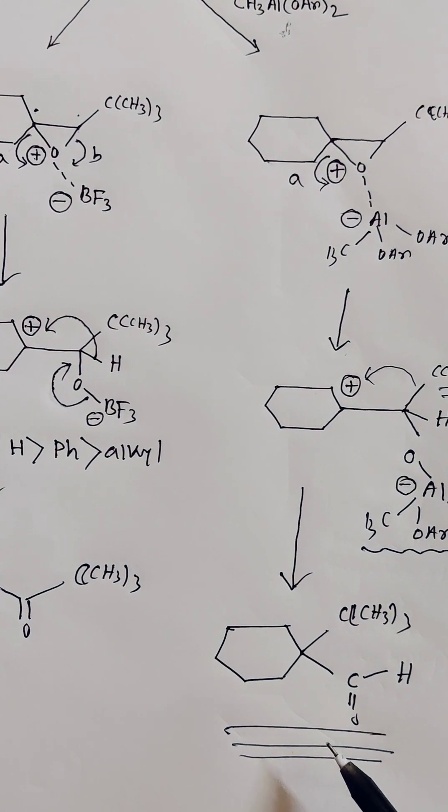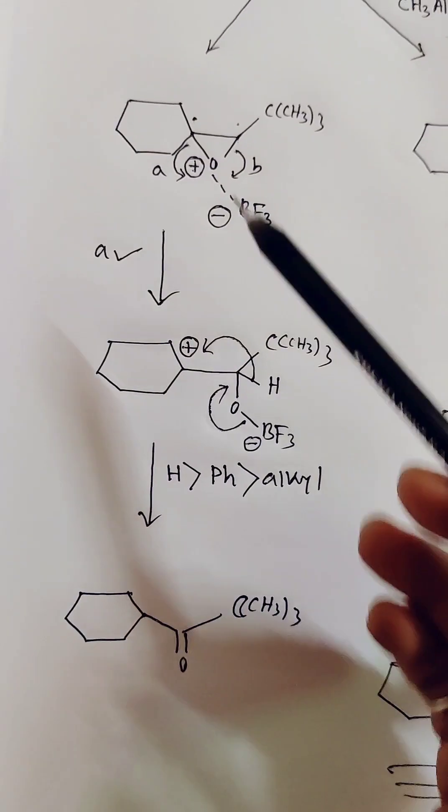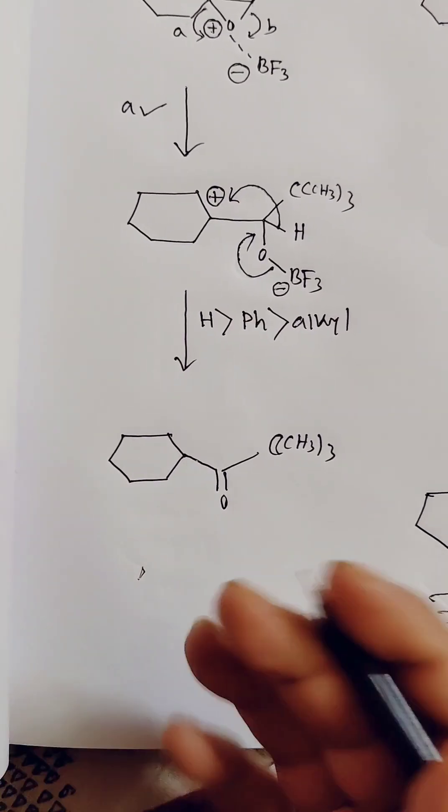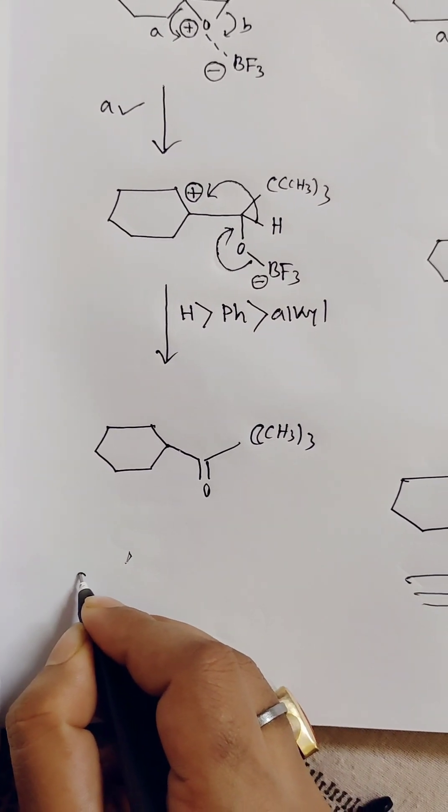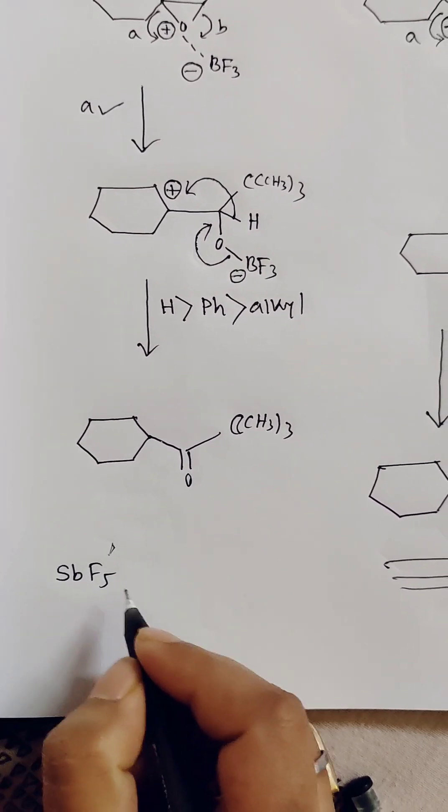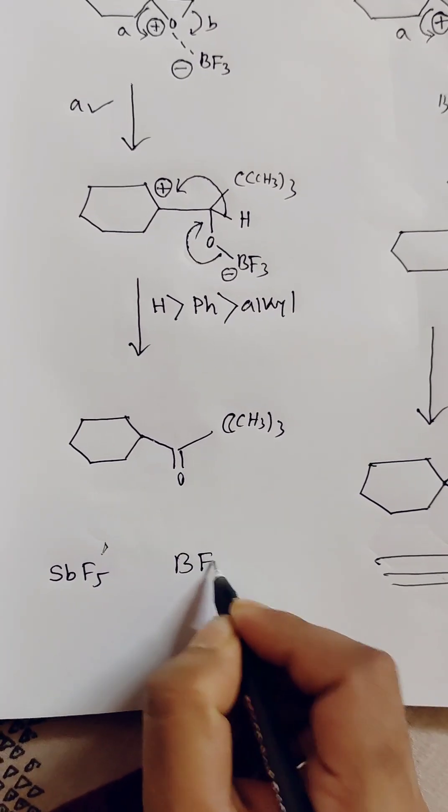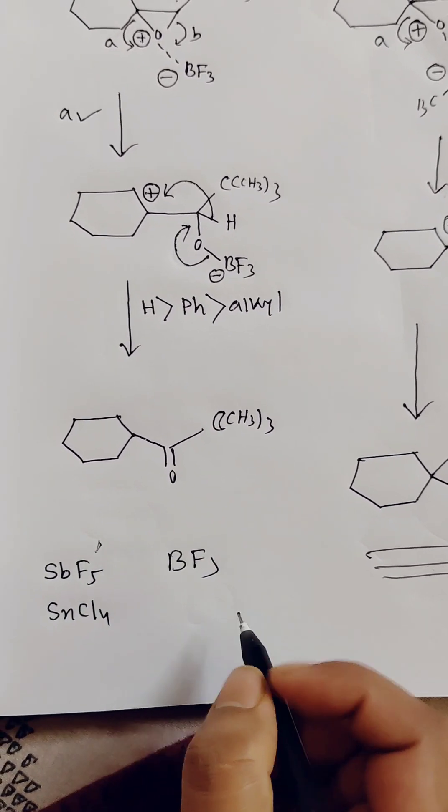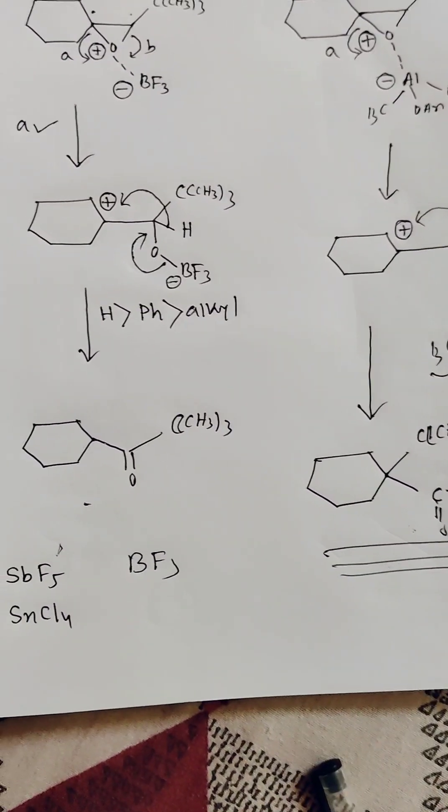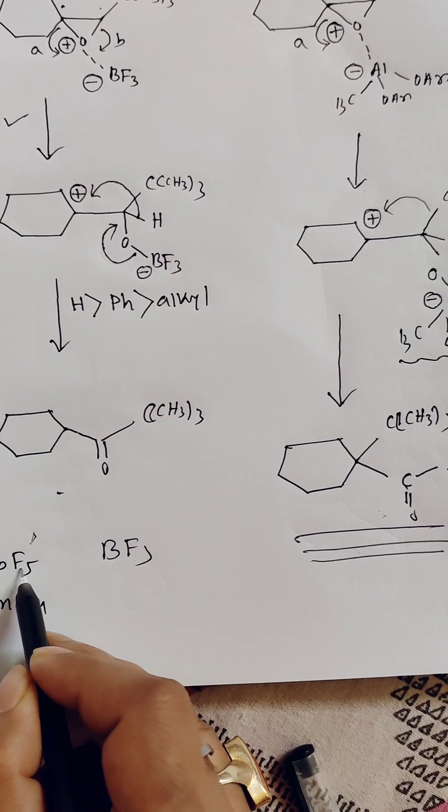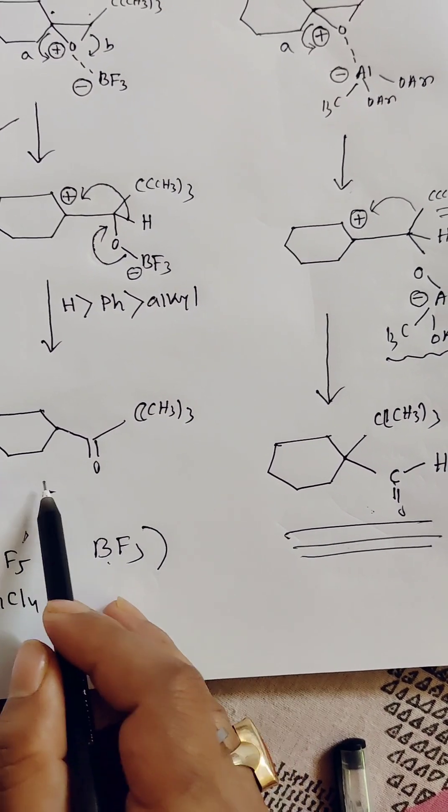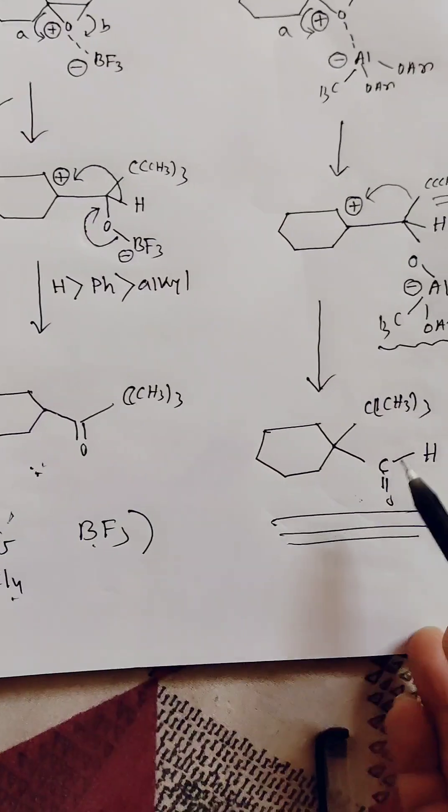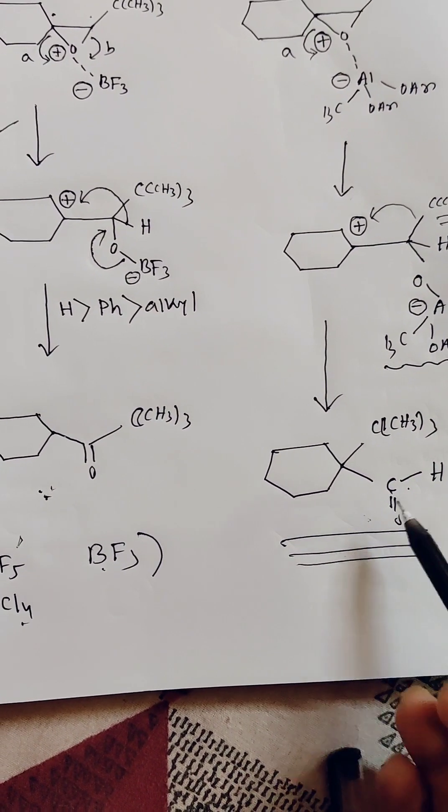That's why aldehyde formation is favored. But in this case, ketone will form. If we see the other cases—for SbF5, this is almost similar to BF3, but in the case of SnCl4, this will give 50% aldehyde and 50% ketone. In both cases of SbF5 and BF3, ketone will form as the major product. But in the case of SnCl4, 50% ketone and 50% aldehyde will form—that means 50% chance of proton transfer and 50% chance of bulky alkyl group transfer.